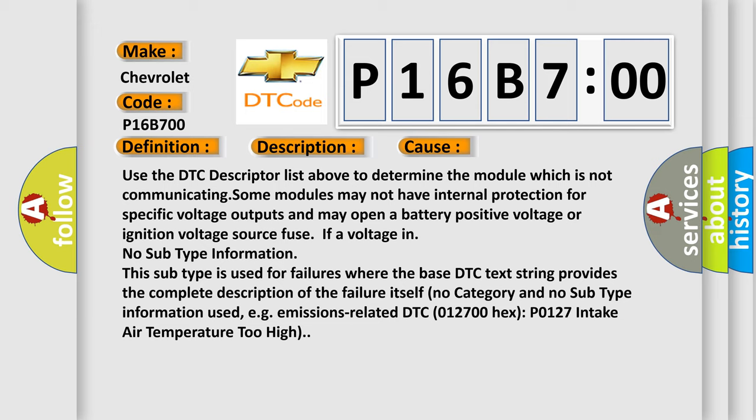Use the DTC descriptor list above to determine the module which is not communicating. Some modules may not have internal protection for specific voltage outputs and may open a battery positive voltage or ignition voltage source fuse. This subtype is used for failures where the base DTC text string provides the complete description of the failure itself.